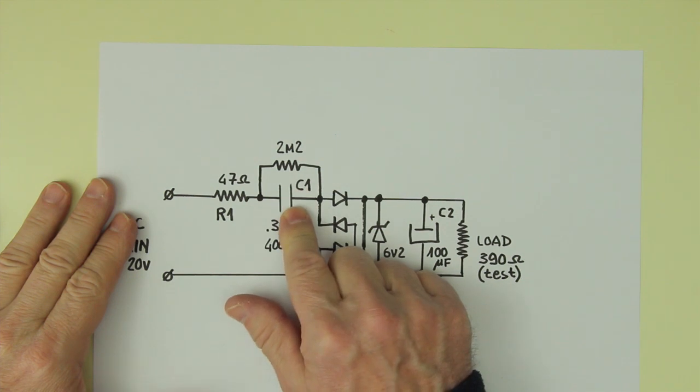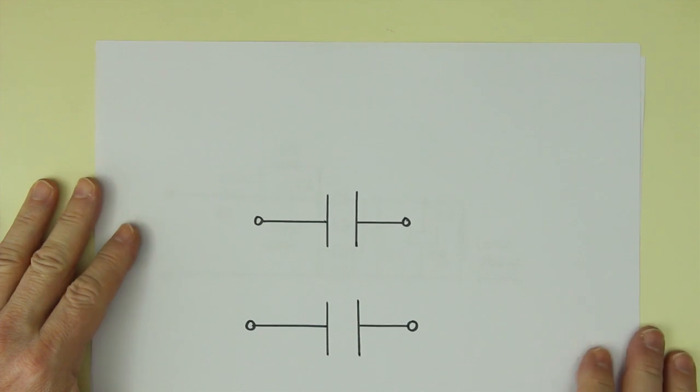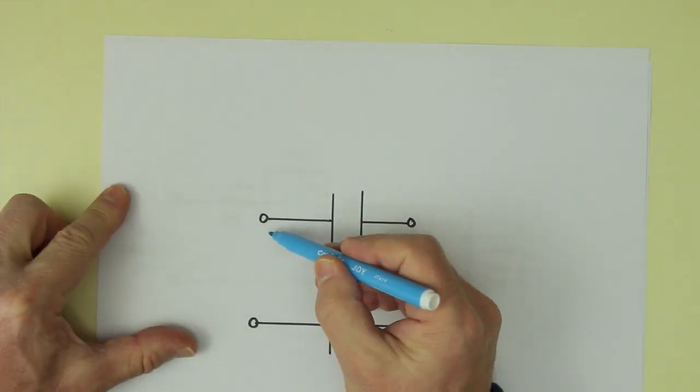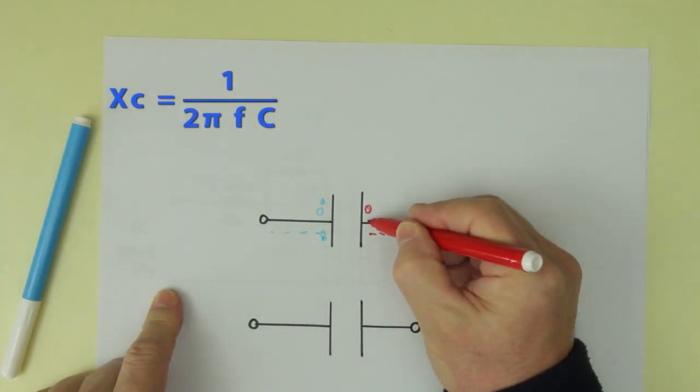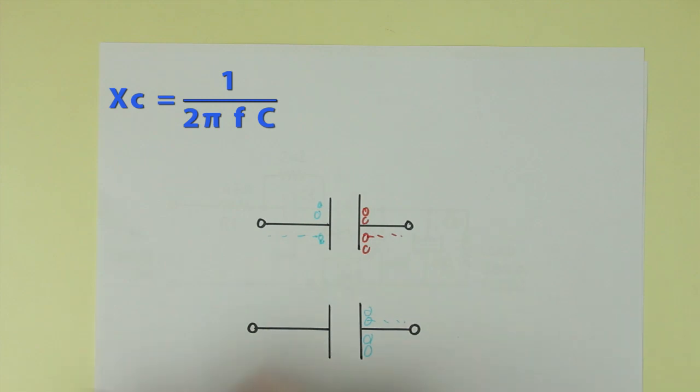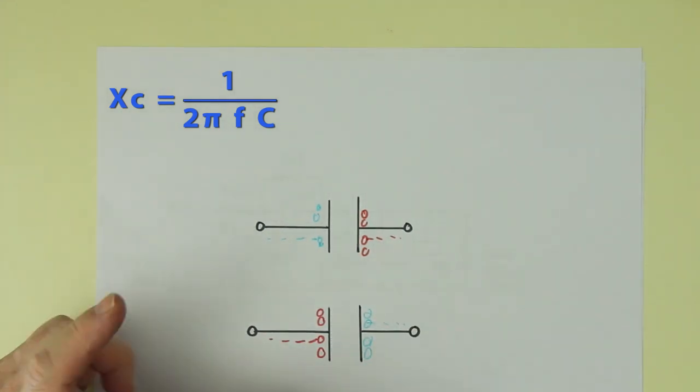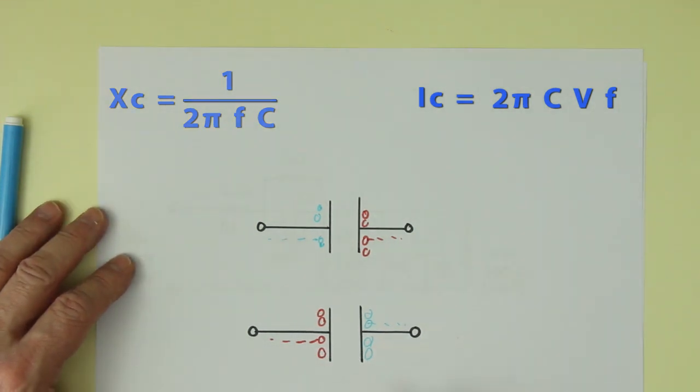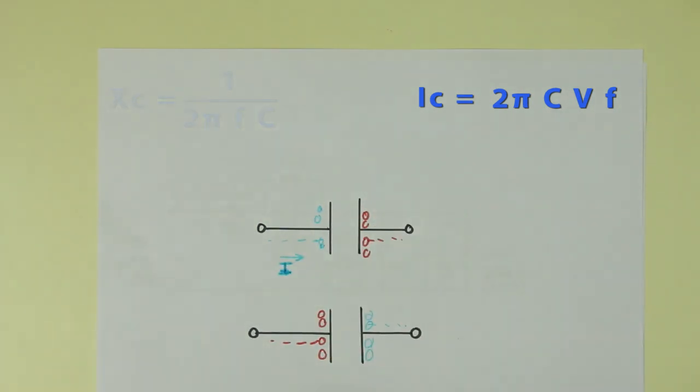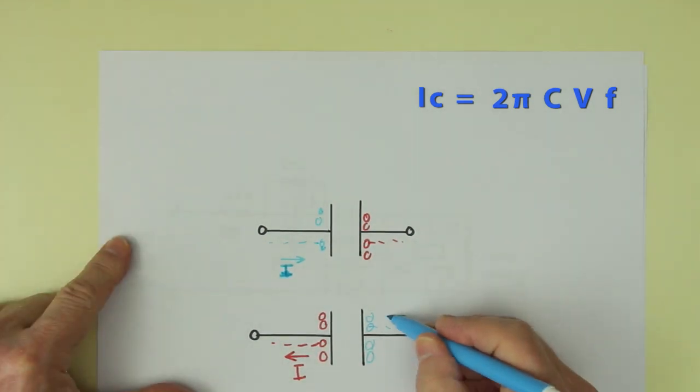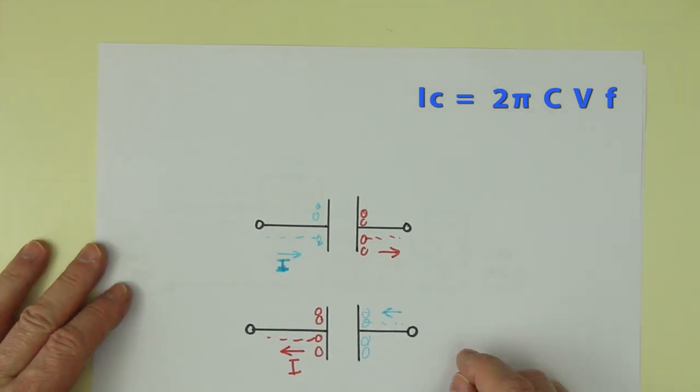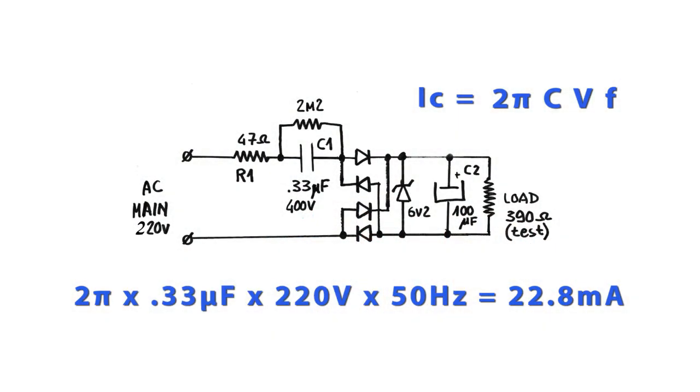The whole job is performed by the C1 capacitor. Its function is to provide a reactive impedance that limits the current by the following law: Xc equals 1 over 2πFc, or we can simply calculate the theoretical current with the formula Ic equals 2πCVF. Entering the actual values of the components used in the circuit under test produces a result of 22.8 mA, which is pretty close to the measured value.